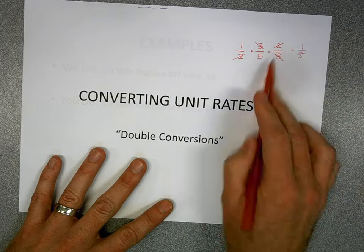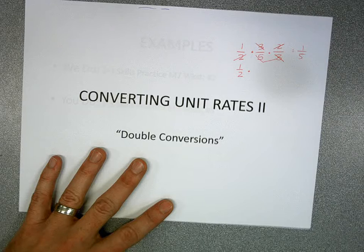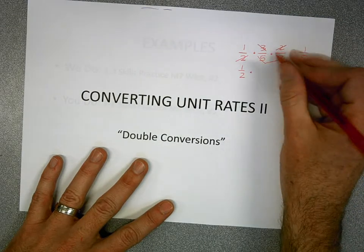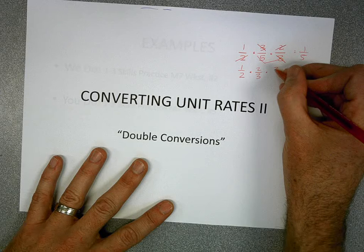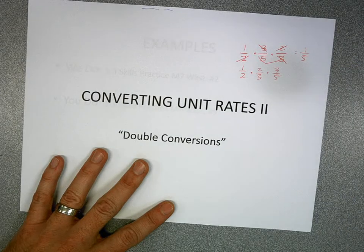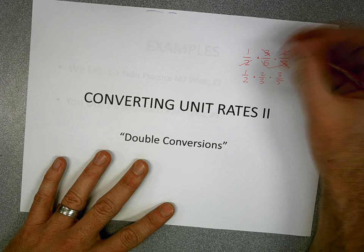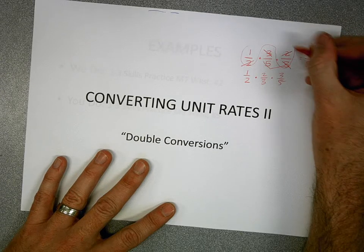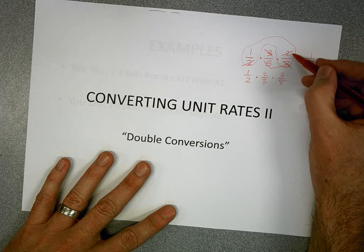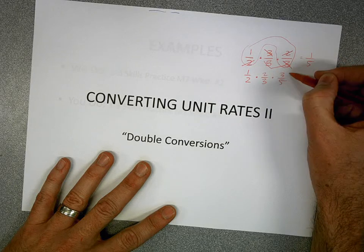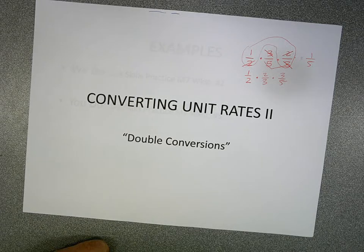If you're wondering why, remember the commutative property of multiplication — meaning we could flip-flop those two and still get the same answer — and the associative property of multiplication, meaning you could multiply any two of them first and then multiply by the third. So because it's all multiplication, we can reduce even if factors are not right next to each other.